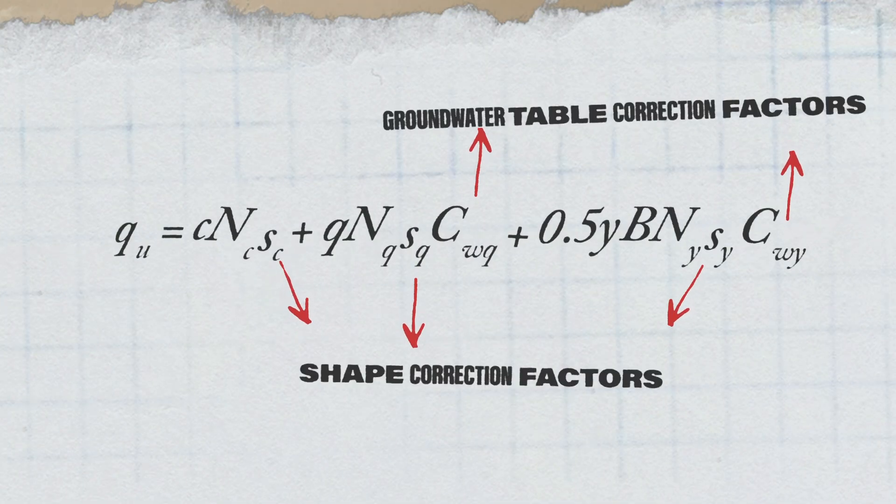On the other hand, if the question doesn't match these assumptions — for example, if it's not a strip footing — then additional factors need to be added to Terzaghi's equation to account for those conditions. When it comes to the civil FE and PE exam, the two most common factors are shape correction factors and groundwater table correction factors. These factors can be calculated based on the friction angle or by formulas included in the tables found in both the FE and PE reference handbooks. For example, if you get a question involving a square footing and the groundwater table does impact the foundation, here's what the ultimate bearing capacity equation would then look like.